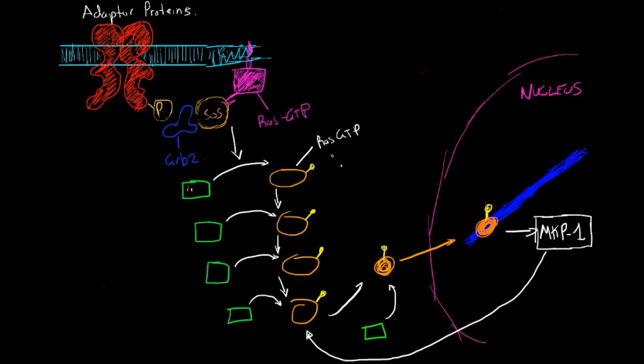The RAS GTP will then phosphorylate this - this is the inactive version of each one of these kinases. It will phosphorylate this membrane bound RAF, which then will phosphorylate a protein called MEK. And MEK will phosphorylate a protein called ERK, which will then turn on transcription factors.